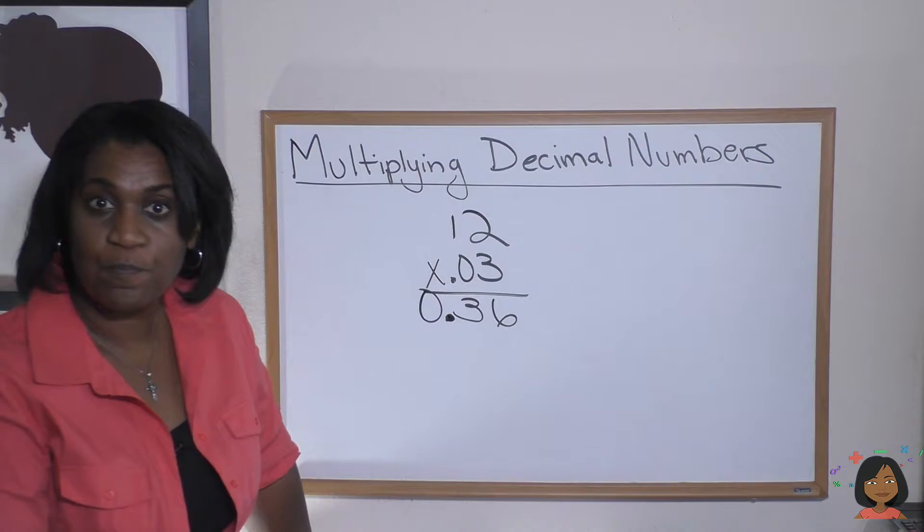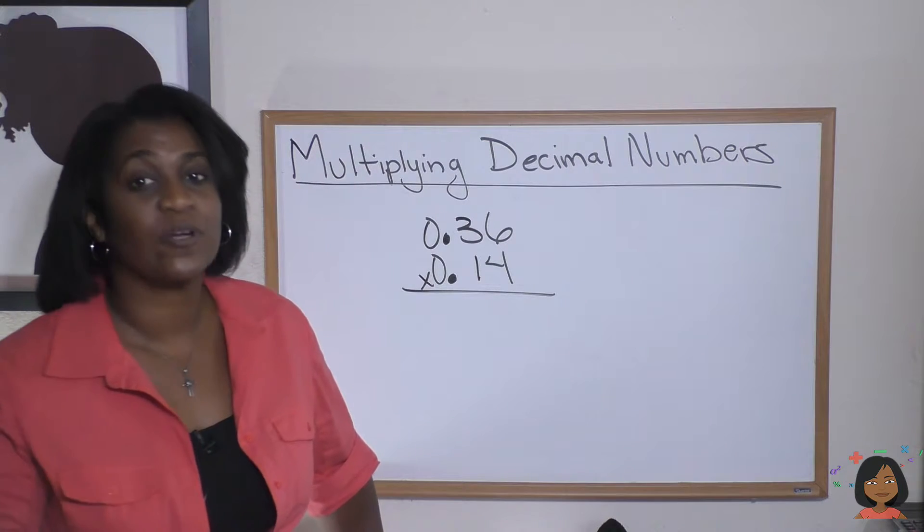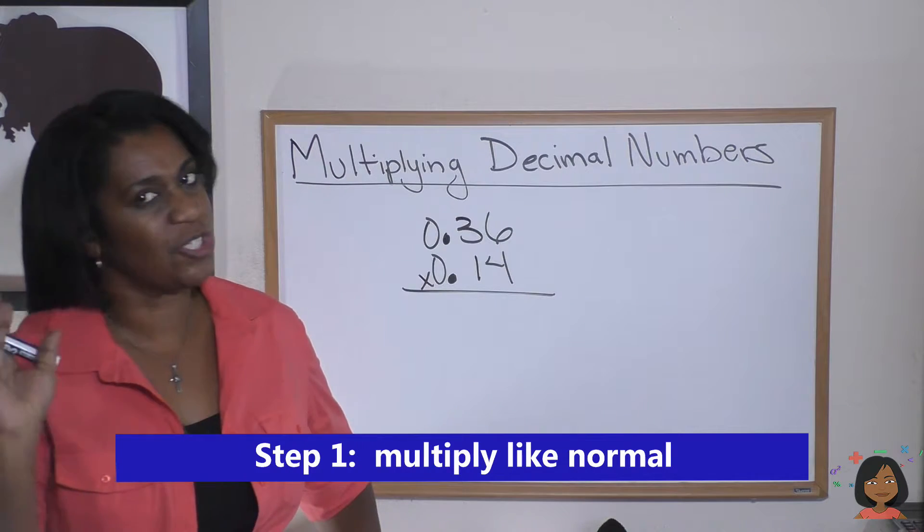Let's take a look at another example. Here we have 0.36 times 0.14. Well, remember the rule: do your multiplication like normal.